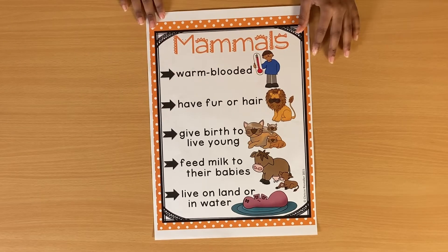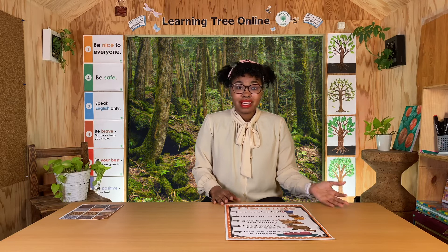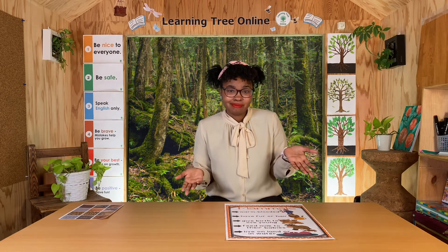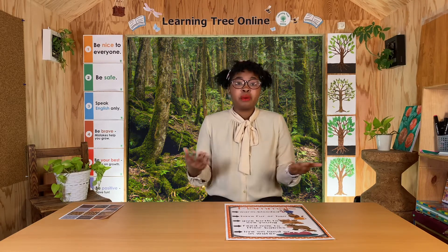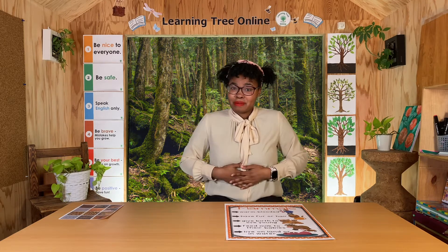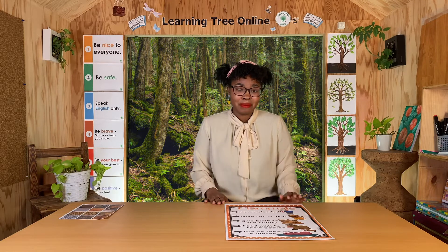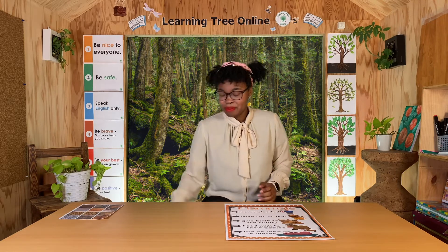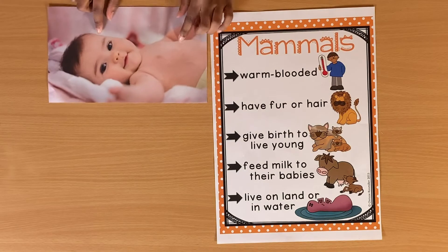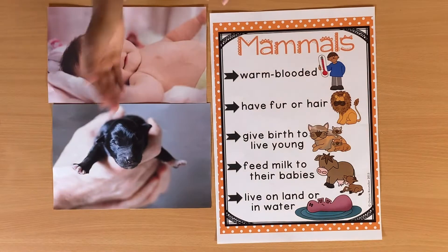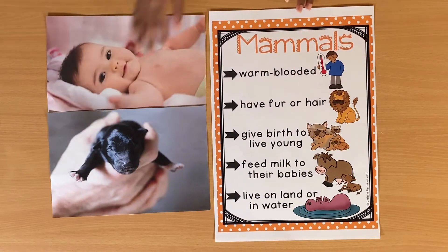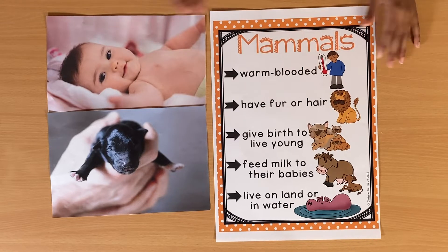Next, mammals give birth to live young. Do you have a little brother or sister? People don't come out of eggs — they come out of mommy's tummy, and that's how you know something is a mammal. Mammals give birth to babies. If it's a person, you get a cute little baby. If you have a dog, maybe you'll get a puppy. Giving birth to live young means the baby comes out not from an egg but from mommy. Also, we feed babies milk — that's another way we know something is a mammal.